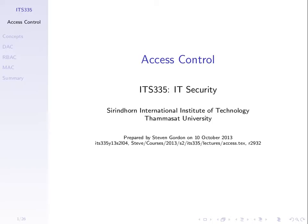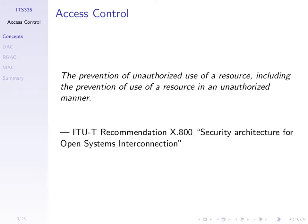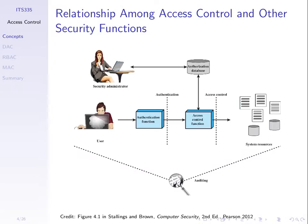With a computer system, we'd like to better control what different users can do. That's what access control does — it prevents unauthorized use of resources, where resources may be files, physical resources like the CPU, parts of files, or processes. For access control to work, we rely on some authentication mechanism because access control is usually specified per user, so we assume users have already been authenticated and logged in.